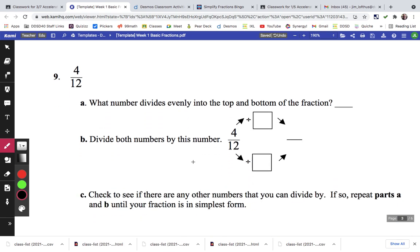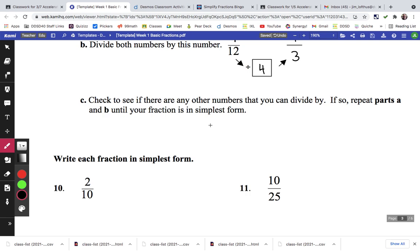All right, write the number that divides evenly into both top and the bottom of the fraction. And that's a 4. 4 divided by 4 is 1, 12 divided by 4 is 3. Check to see if there's any of the numbers you can divide by. If so, repeat part A and B until the fraction is in simplest form.